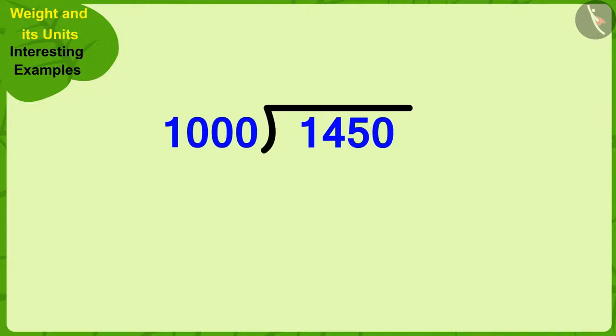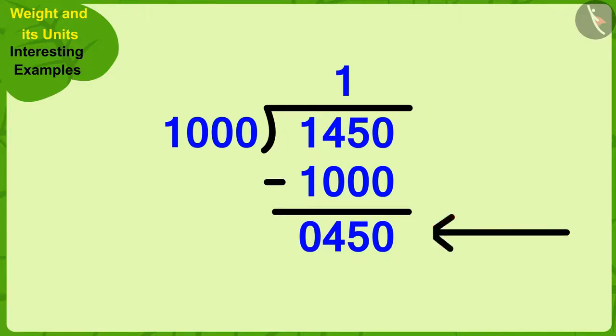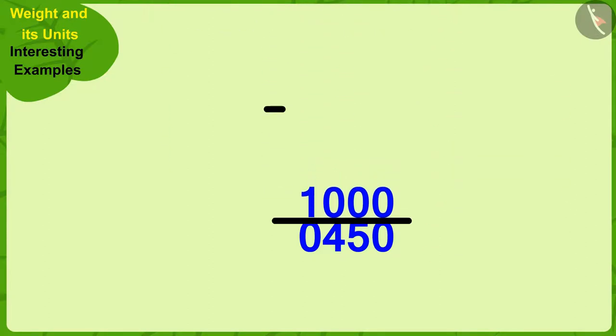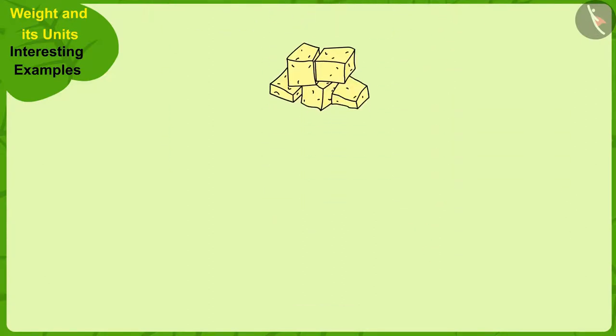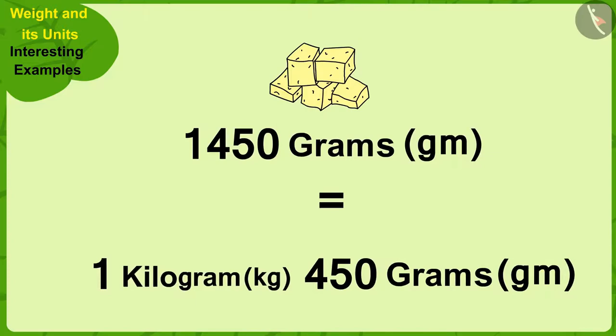We can divide 1450 by 1000 in this way. Now, it is very easy. Whatever number is written here on top is in kilograms and the remaining numbers are the remaining grams. This means 1450 grams is 1 kilogram and 450 grams.